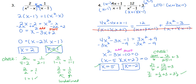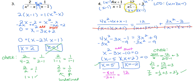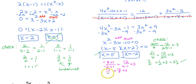Checking x equals negative 2: 4 times negative 2 is negative 8 plus 1, over negative 2 plus 1, equals 12 over 4 minus 1 plus 3. That gives negative 7 over negative 1 equals 12 over 3 plus 3. Negative 7 over negative 1 is positive 7, and 12 divided by 3 is 4 plus 3 equals 7. We get 7 equals 7, so both solutions work. Number 4 has two solutions: x equals 5 and x equals negative 2.